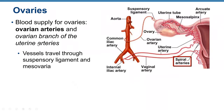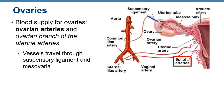Blood supply for the ovaries comes from ovarian arteries and the ovarian branch of uterine arteries. The ovarian arteries branch from the abdominal aorta, and the uterine arteries branch from the internal iliac artery, providing ovarian branches. These vessels travel through the suspensory ligament and the mesovarium, which is part of the broad ligament.